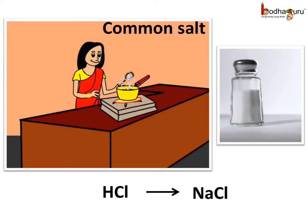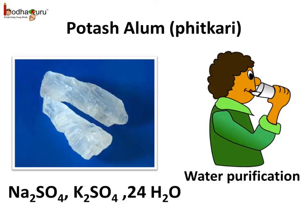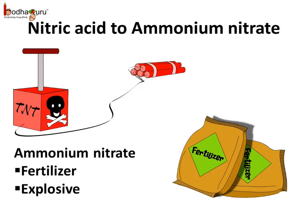Different salts are used for different purposes. Common salt is used for cooking and can be obtained from hydrochloric acid. Potash alum, commonly called phitkari, is used for water purification and is found in crystal form. It is potassium aluminium sulphate with 24 molecules of water of crystallization and can be obtained from sulfuric acid. Ammonium nitrate is used in the production of fertilizers and explosives, and can be obtained from nitric acid.